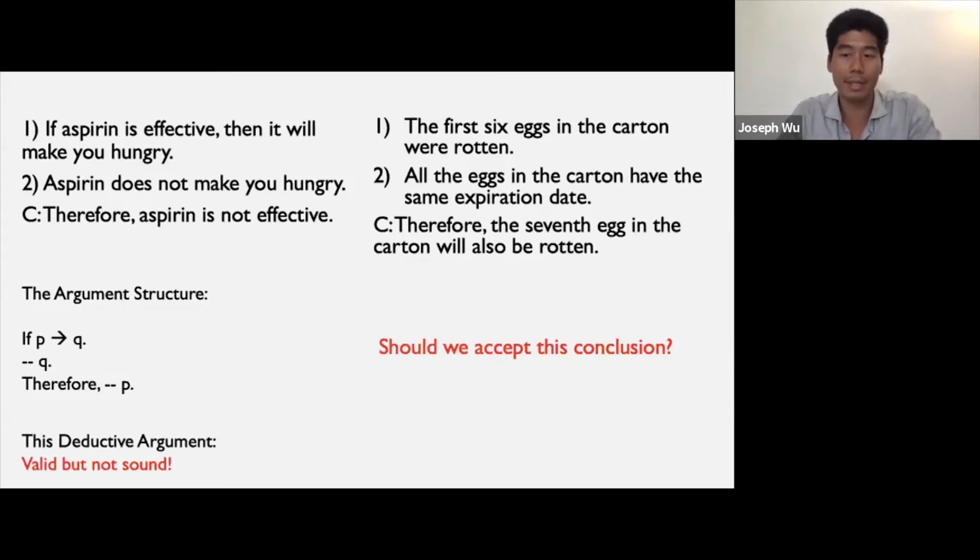This piece of reasoning seems very sensible. After all, it seems very likely after examining the first six eggs that the seventh egg will be rotten too. But note that this argument differs in an important way from the first one. Even if both premises are true, it may still be the case that the seventh egg in the carton is not rotten. In other words, the premises here do not logically entail the conclusion. Hence, this is not a deductive inference. It is an inductive one.